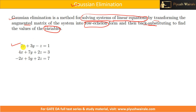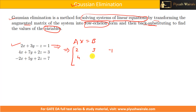This is the system of linear equations given to us. We need to convert this into matrix form, that is Ax = b. A is the coefficient matrix: [2, 3, -1; 4, 7, 2; -2, 5, 2]. x is the variable matrix: x, y, z.